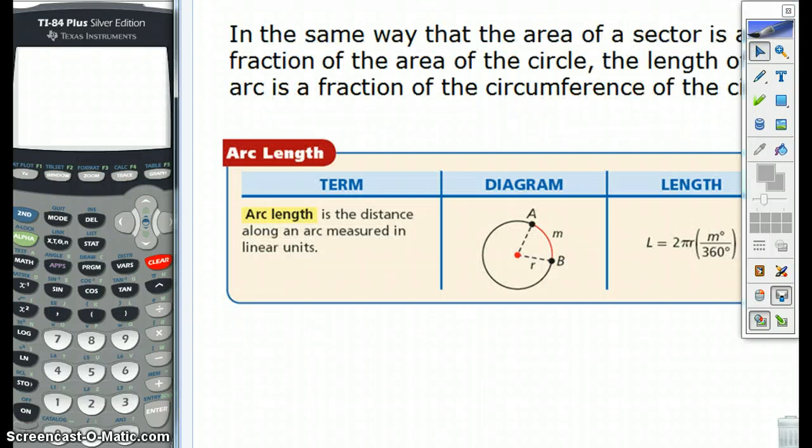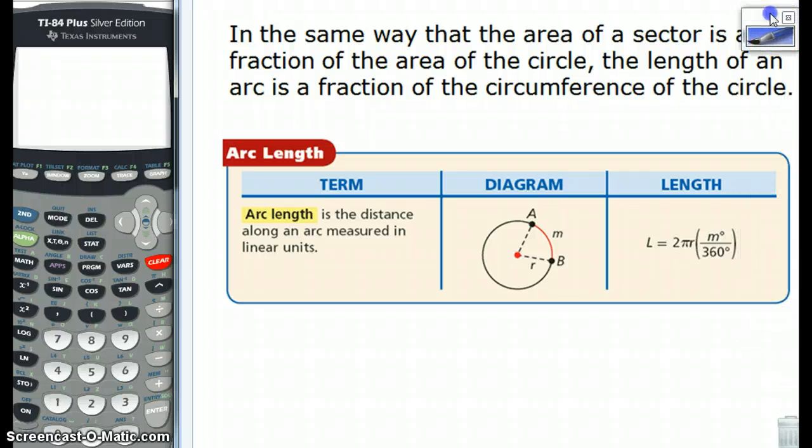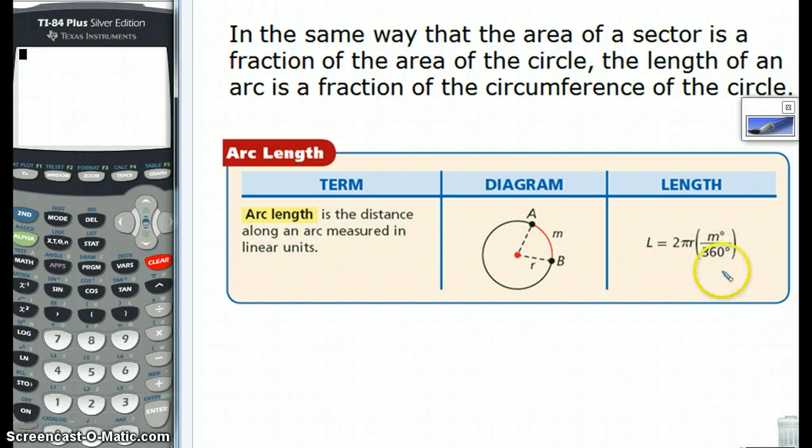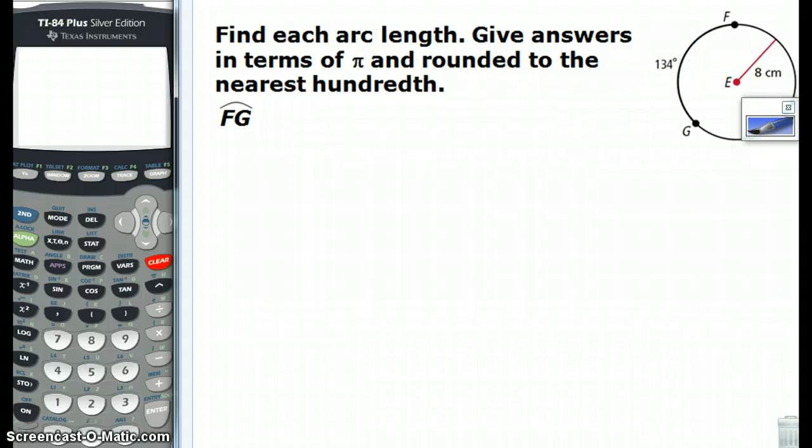So, let's go take what the book says here. In the same way that the area of a sector is a fraction of the area of a circle, the length of an arc is a fraction of the circumference. Pretty much what I just said. So, the arc length is the distance along an arc measured in linear units. All right. So, as we said, it's some fraction of the circumference. That's as easy as it gets.